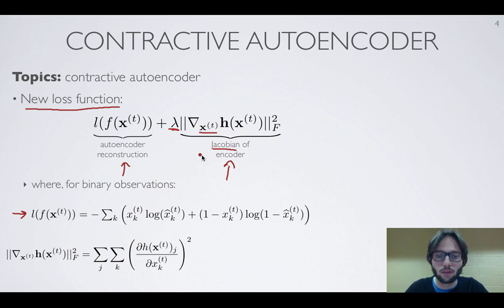And so if we want the square of the Frobenius norm, then it means that we would be, this here would correspond to the sum over all elements at the output of that function in the hidden layer, nested with the sum over all inputs.